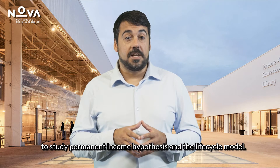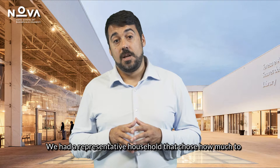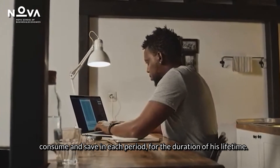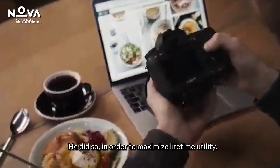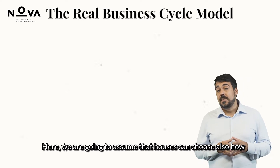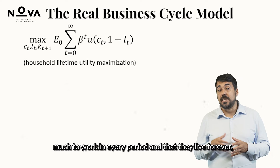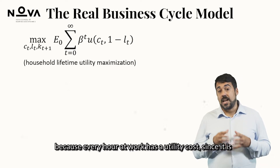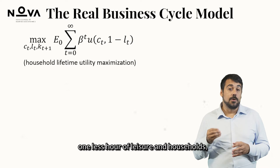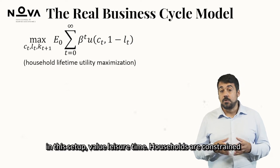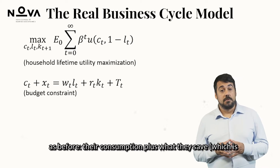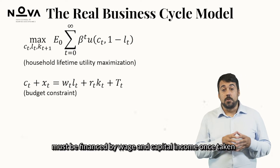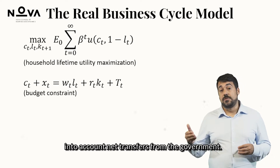Remember the analytical framework for the permanent income hypothesis and the life cycle model: a representative household chose how much to consume and save each period to maximize lifetime utility. Here, we assume households can also choose how much to work every period, and that they live forever for simplicity. They choose work because every hour at work has a utility cost — it is one less hour of leisure — and households in this setup value leisure time. Their consumption plus savings (equal to investment XT) must be financed by wage and capital income, net of government transfers.